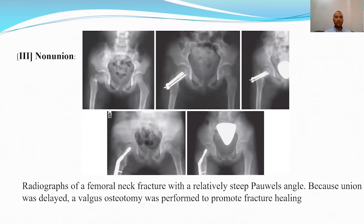The third common complication is non-union. This X-ray shows non-union of a fractured femoral neck fixed by cannulated screws and threaded K-wires, resulting in non-union. Valgus osteotomy was performed to promote fracture healing, achieving good union.